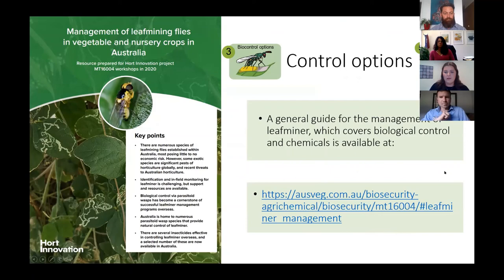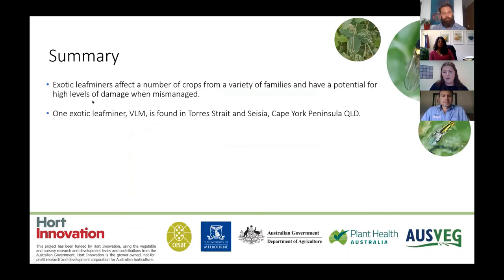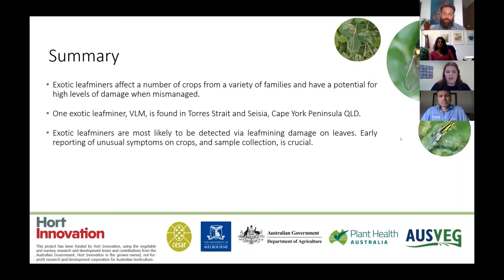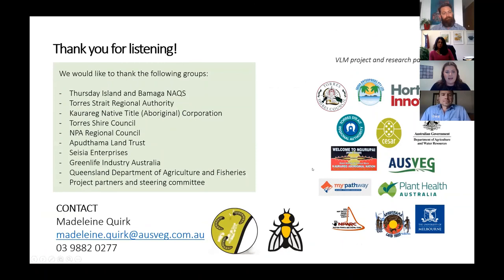To summarise: exotic leaf miners affect a number of crops from a variety of families and have the potential for high levels of damage if mismanaged. The vegetable leaf miner is currently found in the Torres Strait and in Saibai on Cape York Peninsula, while the other two leaf miners are not found in Australia. Exotic leaf miners are more likely to be detected by the damage rather than the pests themselves, so early detection of unusual symptoms is crucial. Parasitoid wasps will play a significant role in leaf miner control in Australia.